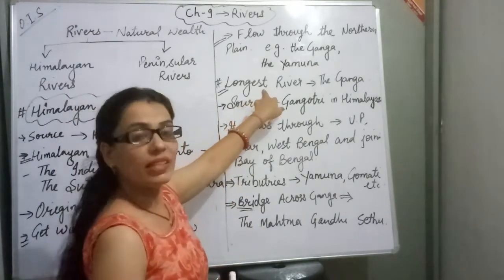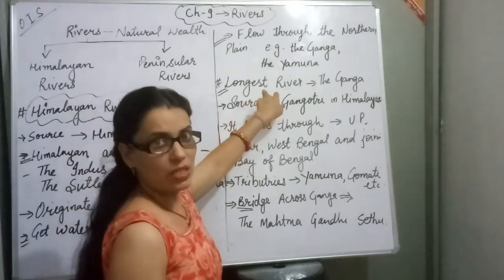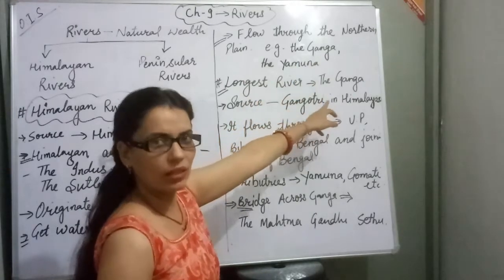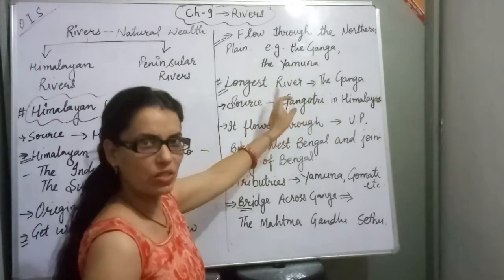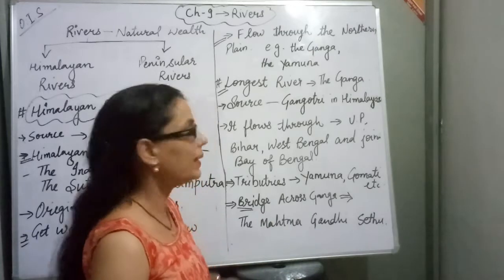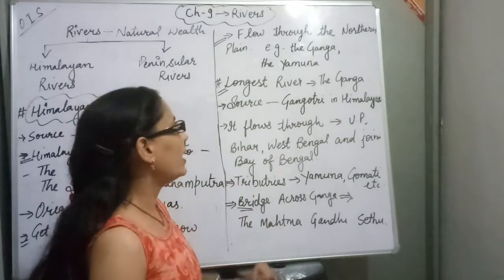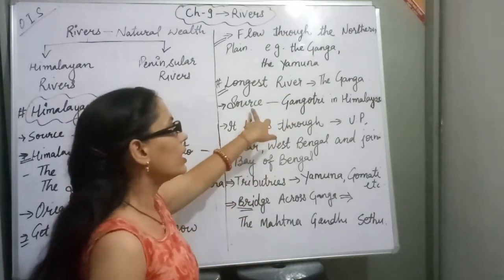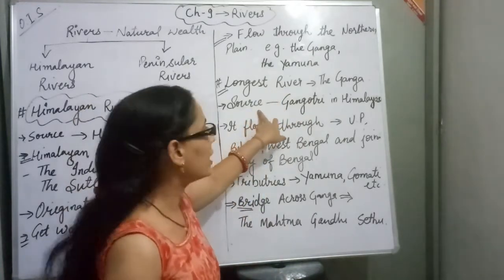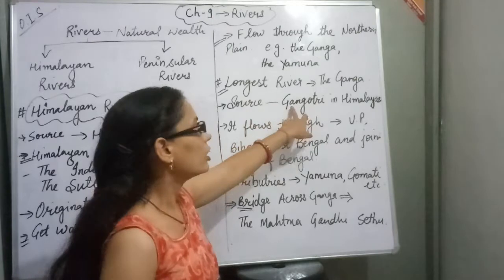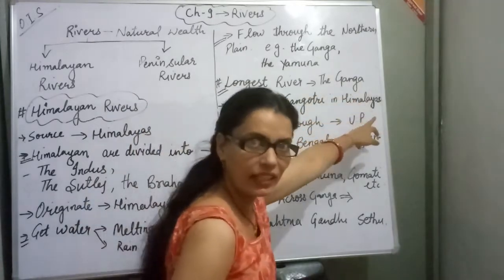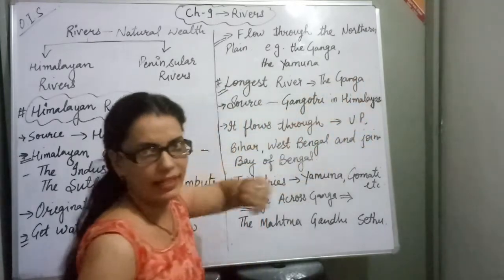Ganga is the longest river in India. The source of Ganga is Gangotri, which is in the Himalayas.